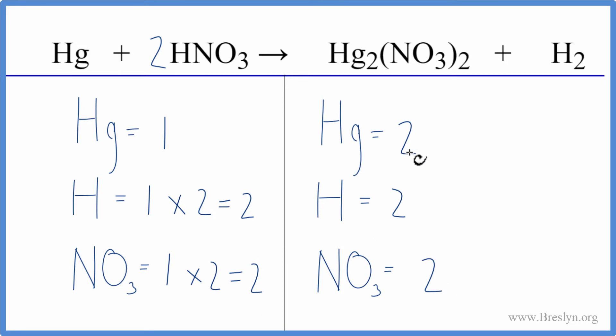And then for mercury, we have two here and one here. We can just put a two in front of the Hg, one times two, and we're done. This equation is balanced.